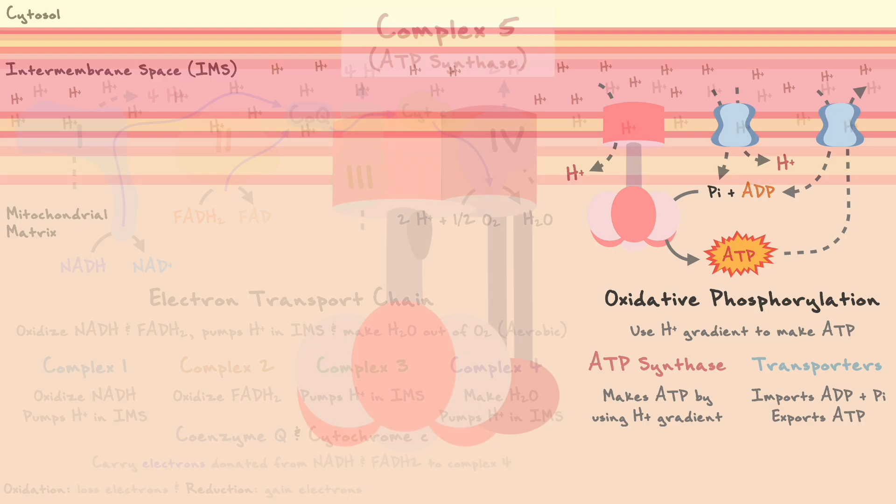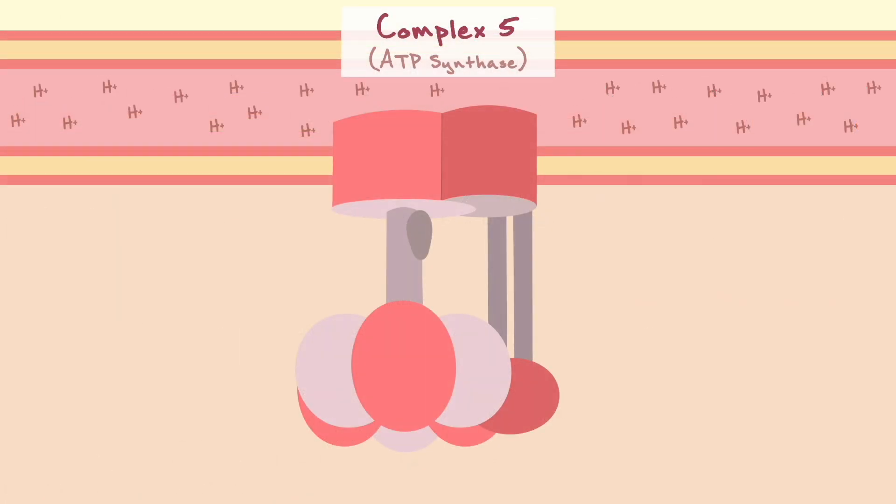let's take a look at the oxidative phosphorylation process in more detail. To do so, let's first consider the molecular architecture of ATP synthase, which is also known as complex 5.